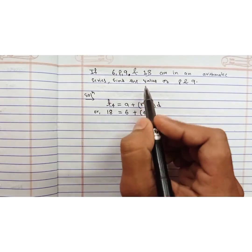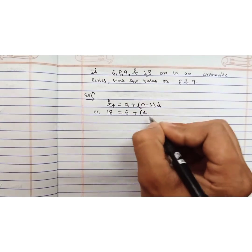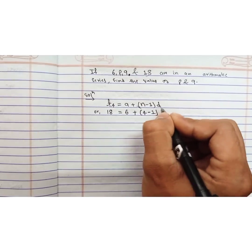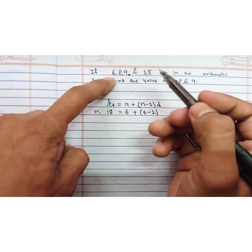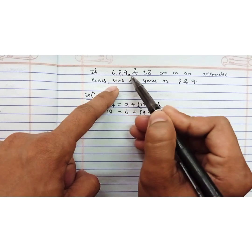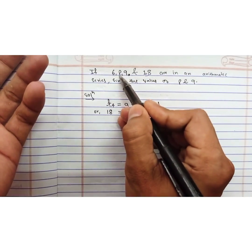So in place of n we write 4 minus 1 times d. Common difference means the difference between two consecutive numbers. It means p minus 6 or q minus p or 18 minus q. We can write here p minus 6 as the common difference.